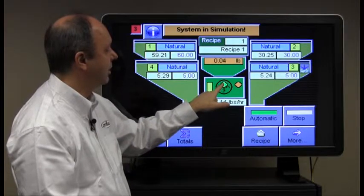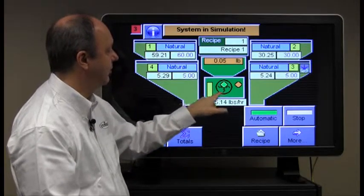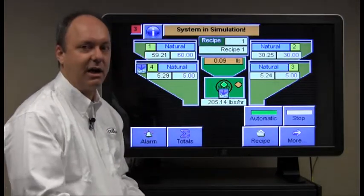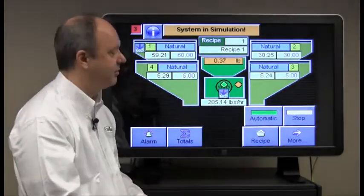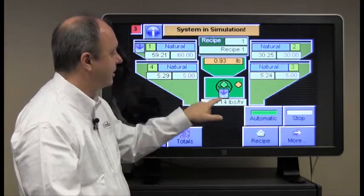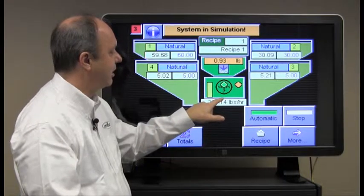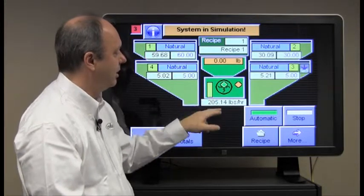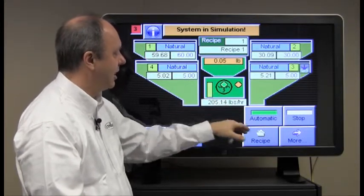The green light on the mixer comes on indicating the mixer is turning and this yellow bar indicates that the proximity sensor inside the mixer has been covered. After it's mixed it, the arrow appears here indicating that the gate at the bottom of the mixer is opened and dumped the mixed material into the process.